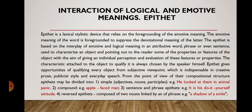Epithet is a lexical stylistic device that relies on the foregrounding of the emotive meaning. The emotive meaning of the word is foregrounded to suppress the denotational meaning. The epithet is based on the interplay of emotive and logical meaning in an attributive word, phrase, or even sentence. Epithet is used to characterize an object and point out to the reader some of the properties or features of the object, giving an individual perception and evaluation. The characteristic attached to the object is always chosen by the speaker himself. Epithet gives opportunities of qualifying every object from a subjective viewpoint, which is indispensable in creative prose, publicist style, and everyday speech.